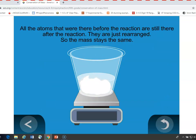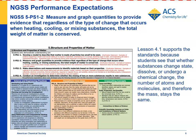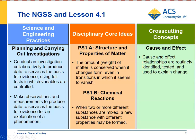For the NGSS standard 5-PS1-2: measure and graph quantities to provide evidence that regardless of the type of change that occurs when heating, cooling, or mixing substances, the total weight of matter is conserved. We don't graph any quantities here, but we measure the mass of substances before the change and after and show that they're the same. Students see that whether it's a change in state like melting, dissolving, or a chemical change — no matter what type of change — the mass of the products equals the mass of the reactants.